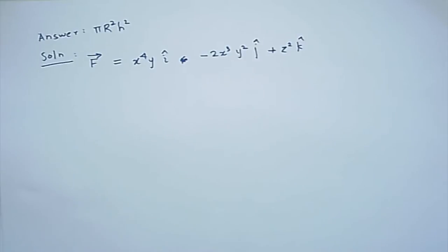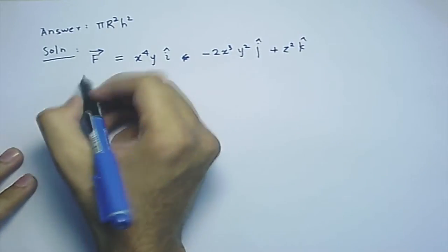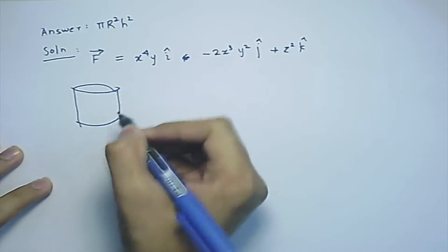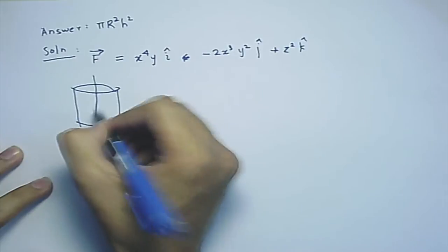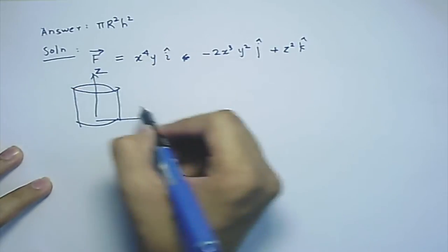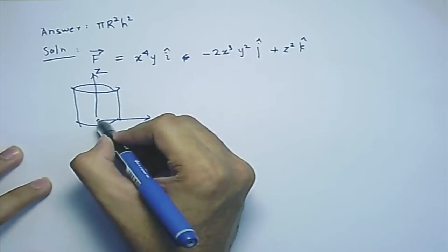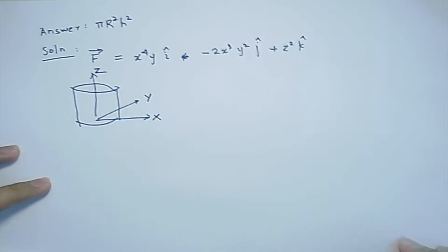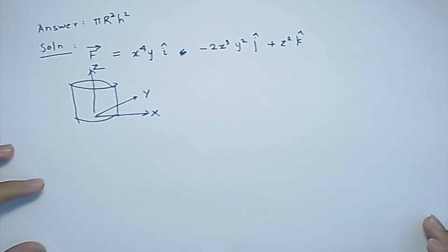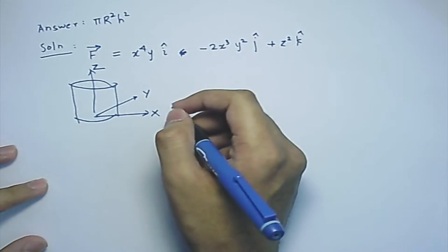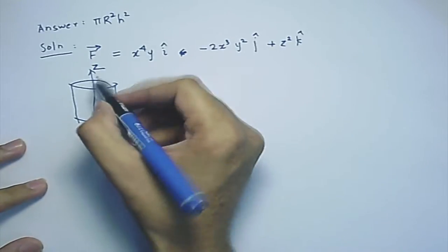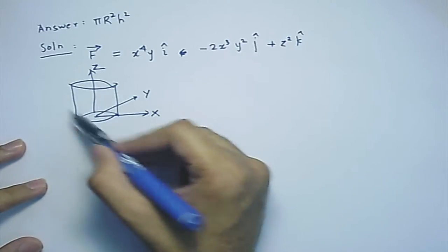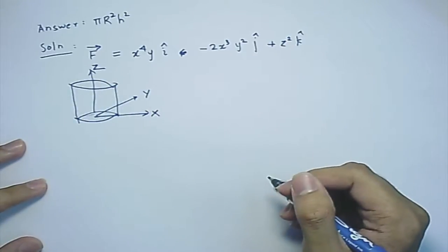When you draw the surface, the cylinder is oriented along the z axis and the base is on the xy plane. The cylinder has three surfaces: one base at the bottom, another base at the top, and the curved surface along which you need to find the integral.